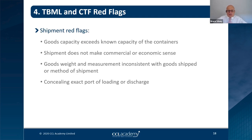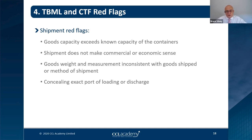Shipment red flags include containers that are too small for the declared goods — for example, 60 square meters of goods claimed to fit into a 40 square meter container. A famous example involved scrap copper shipped from China to New York, which was both geographically suspicious and mispriced at good-quality copper prices rather than scrap prices. Always check whether weights and measurements are consistent with the goods shipped — compare against publicly available data to verify appropriate weights.